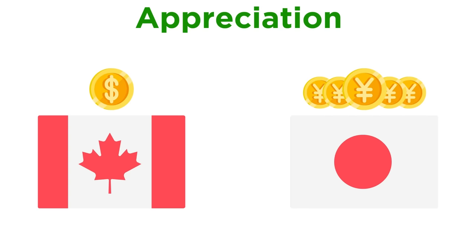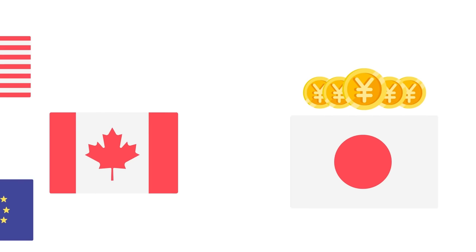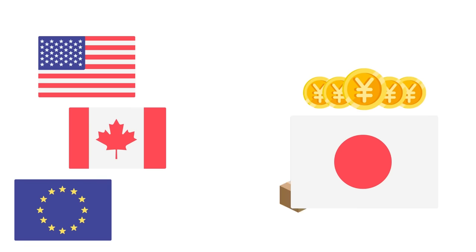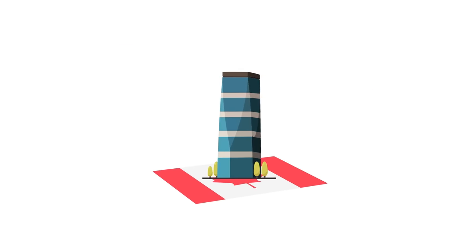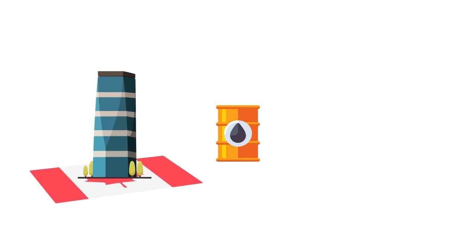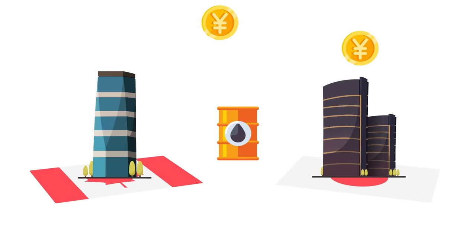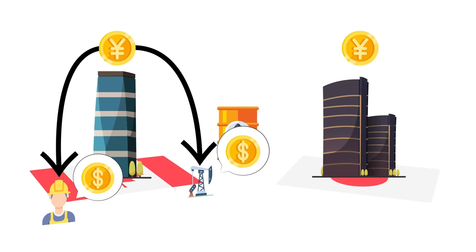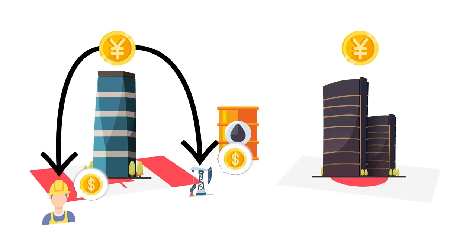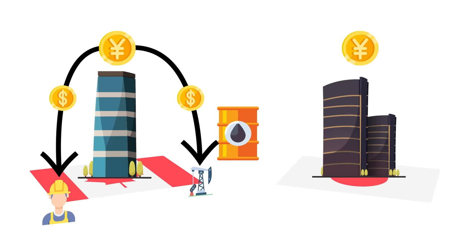When a country's currency depreciates, its goods become cheaper to other countries, which usually means they export more stuff. Now suppose a company in Canada sells oil in Japan. That company is paid in yen, but back in Canada, it has to pay its workers and suppliers in dollars. Therefore, the company has to exchange its yen for Canadian dollars.